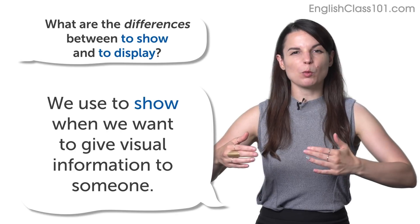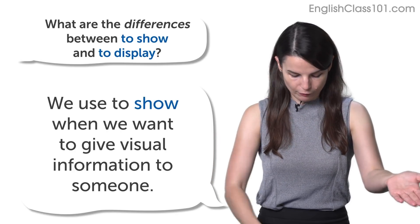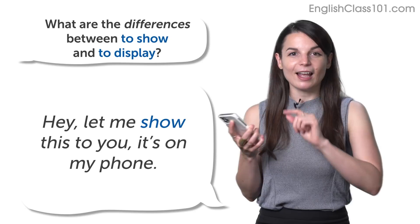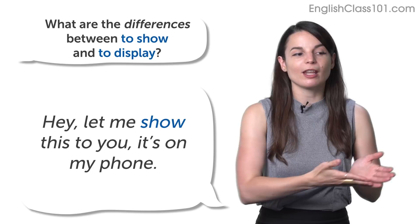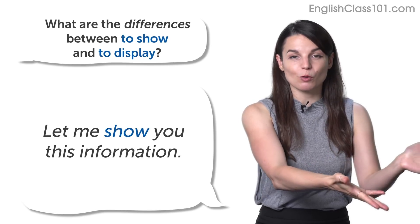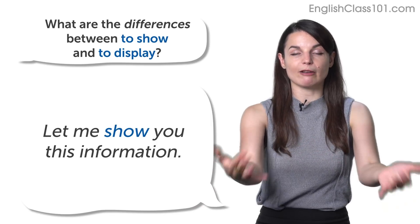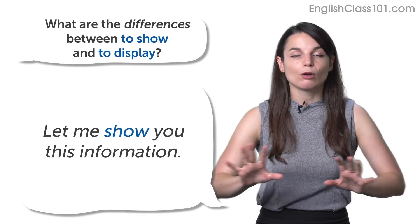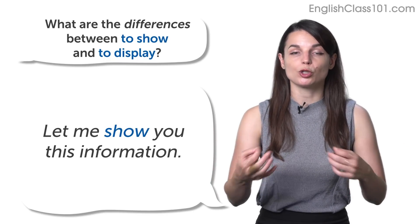We use to show when we want to give visual information to someone else. So, for example, you have something on your phone and you want to share it with someone else, you can say, hey, let me show this to you. It's on my phone. Or when you want to give someone physical information on a piece of paper, you could say, let me show you this information. So, the idea with show is that you're giving someone visual information. You're providing them with something on a piece of paper or on your phone, whatever. You want to share that with them. We use show to express that.